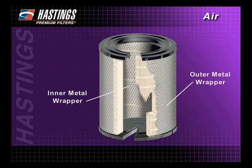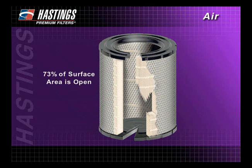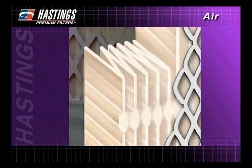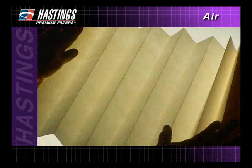The inner and outer metal wrappers protect the filter media and provide structural strength for the completed filter. At least 73 percent of the surface area of all Hastings metal wrappers are open, allowing minimal air flow restriction. The paper media is the most important part of the air filter. Aside from selecting the proper media for each application, Hastings ensures maximum strength and minimum restriction on its heavy-duty filters through its perma-pleat design.